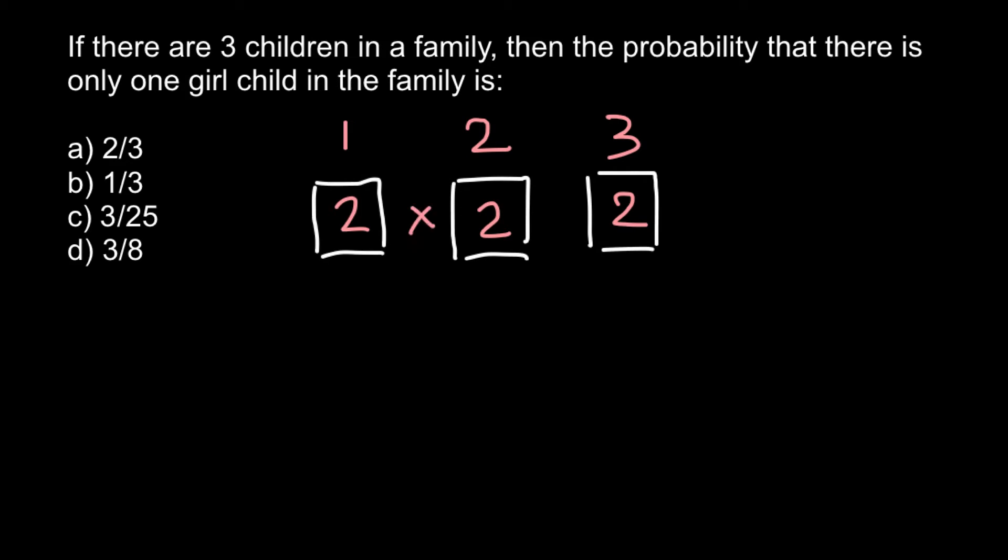So total number of combinations would be, we have to multiply all these probabilities, and this is going to be 2 multiplied by 2 is 4, and multiply it by 2 is 8. So total number of combinations would equal 8.